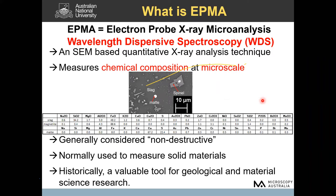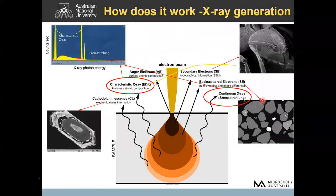Any solid material that is stable under high vacuum and when exposed to the electron beam can be measured. The first EPMA was developed and has been extensively used in earth science and material science research. In fact, nowadays it has become an industry standard for earth science research. This technique has many similarities to EDS, which my colleague Frank talked about yesterday.